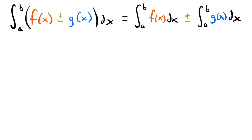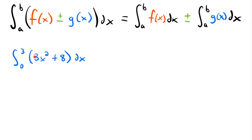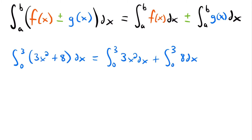Our next property is a two-for-one. If we have the integral from a to b of f(x) plus or minus g(x), that equals the integral from a to b of f(x), plus or minus the integral from a to b of g(x). For example, the integral from 0 to 3 of 3x squared plus 8 dx can be split into the integral of 3x squared dx plus the integral of 8 dx, both from 0 to 3.